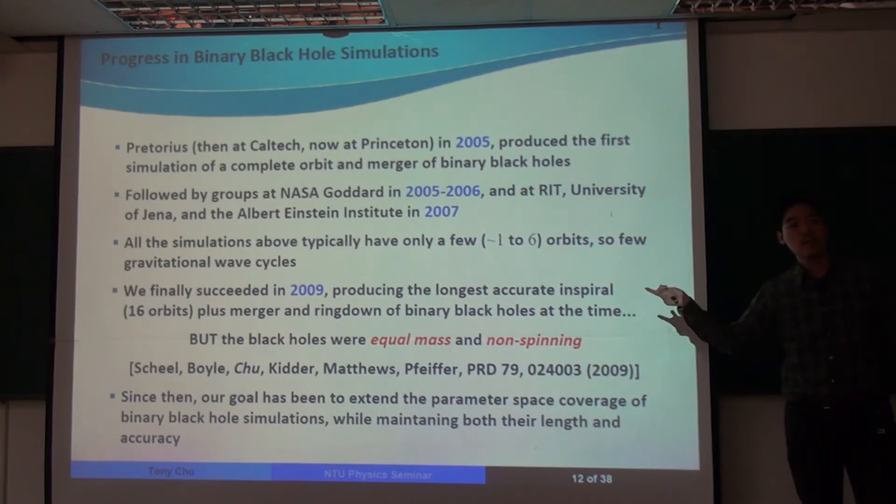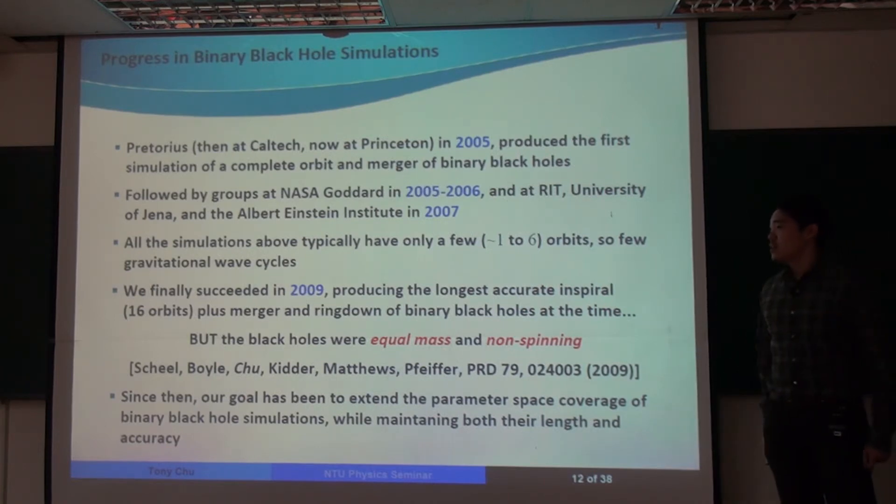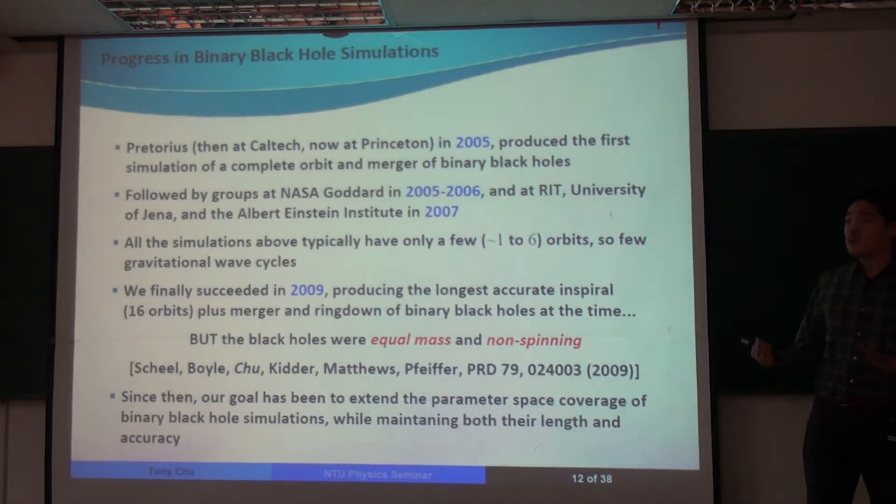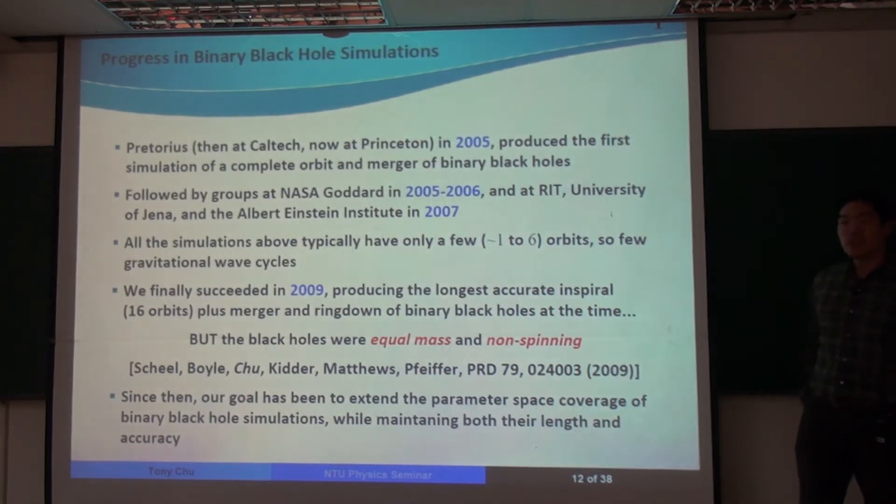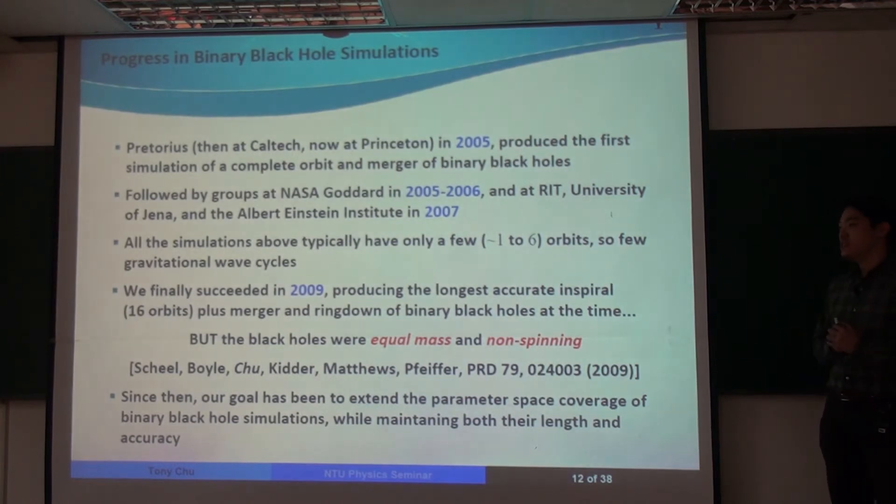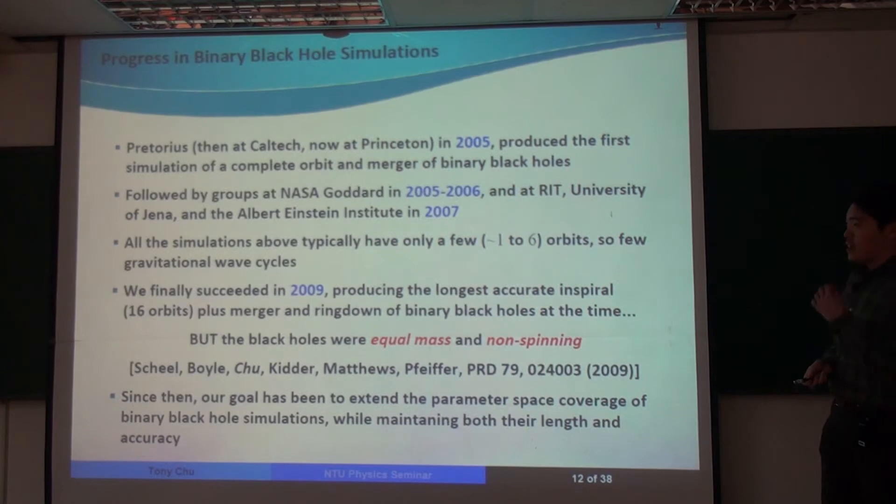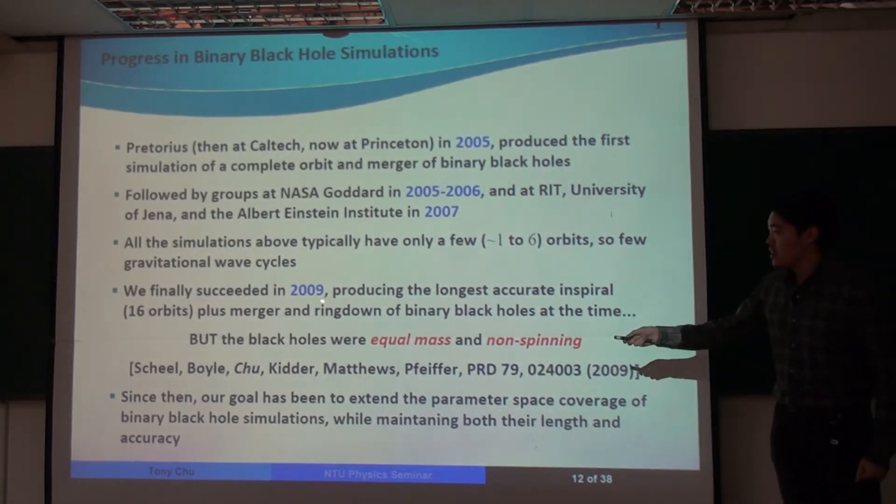So I entered graduate school at Caltech in 2006. And the first project that I was given was to use our spectral Einstein code to simulate the merger of binary black holes. Before then, we were not able to get mergers with our code yet. So that was my first problem. And I worked on that for a few years. And finally, in 2009, we succeeded.